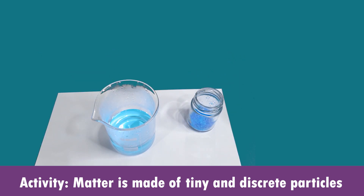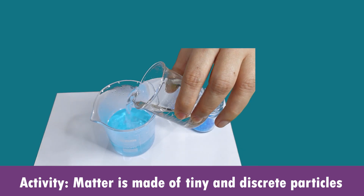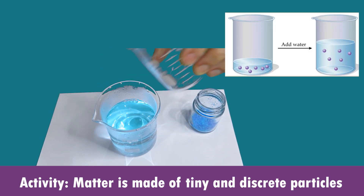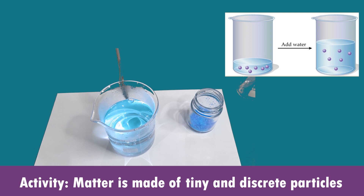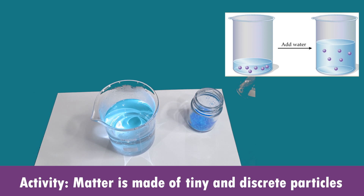Next, I'm adding some water into the copper sulphate solution. As you can see, the colour of the solution turns lighter. This is because after some water is added, the quantity of water particles increases whereas the amount of copper sulphate remained unchanged. The solution is diluted. This activity shows that the crystal of copper sulphate is made of millions of tiny and discrete particles, some of which still remain in water even after dilution.